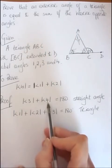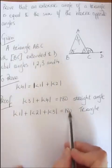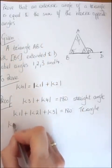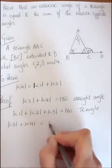So if 3 and 4 equal 180, and 1, 2 and 3 equal 180, then 3 and 4 equal 1, 2 and 3.